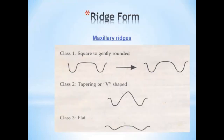Next is the residual ridge form. The maxillary residual ridge can be classified as Class 1 — square to gently rounded — which is the most favorable, as it resists lateral displacement and, since it has parallel sides, maintains the seal and resists vertical displacement. Class 2 is the tapering or V-shaped form, which resists lateral displacement but the vertical displacement breaks the seal. The third is the flat form, which resists vertical displacement but offers only little resistance to lateral displacement.